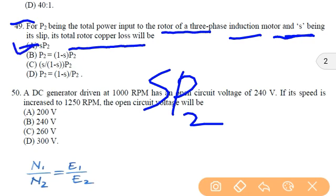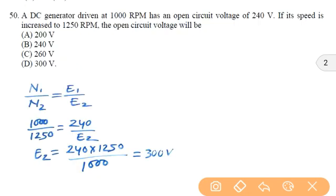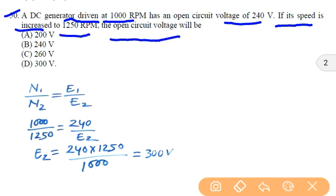In the next question, a DC generator driven at 1000 RPM has an open circuit voltage of 240 volt. If its speed is increased to 1250 RPM, the open circuit voltage will be, obviously it will increase. So 200 and 240 will not be the correct answer. So let us find the correct answer.